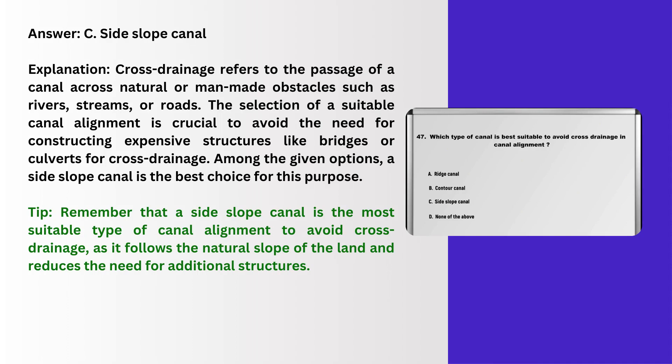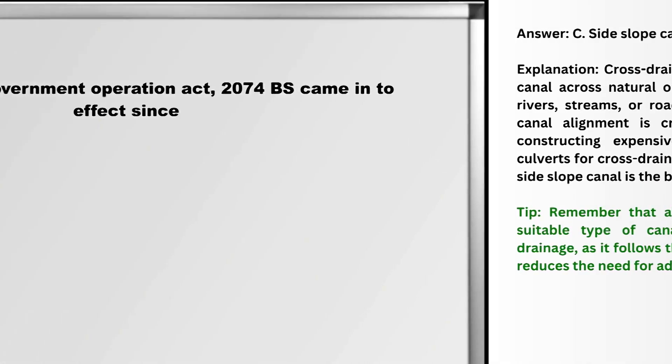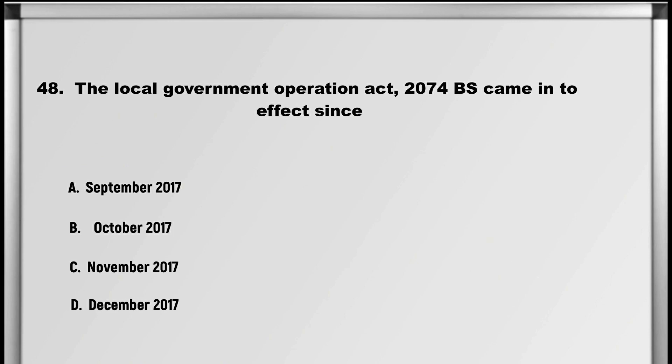Explanation: Cross drainage refers to the passage of a canal across natural or man-made obstacles such as rivers, streams, or roads. The selection of a suitable canal alignment is crucial to avoid the need for constructing expensive structures like bridges or culverts for cross-drainage. Among the given options, a side slope canal is the best choice for this purpose. Tip: a side slope canal is the most suitable type of canal alignment to avoid cross-drainage as it follows the natural slope of the land and reduces the need for additional structures.